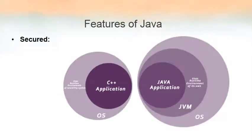Java is also secured. We can see the difference between a C++ application and a Java application. A C++ application runs inside the operating system itself, so applications written in C++ directly interact with the OS. But a Java application runs inside the JVM — the Java Virtual Machine — so JVM creates an environment in which all Java applications run. Java applications do not interact with the operating system directly, so our applications are more secure.